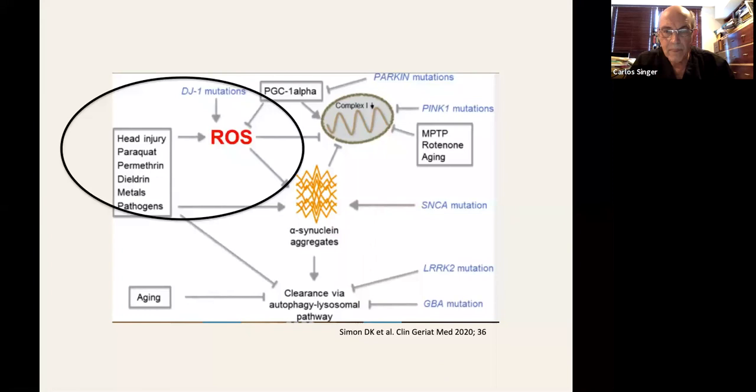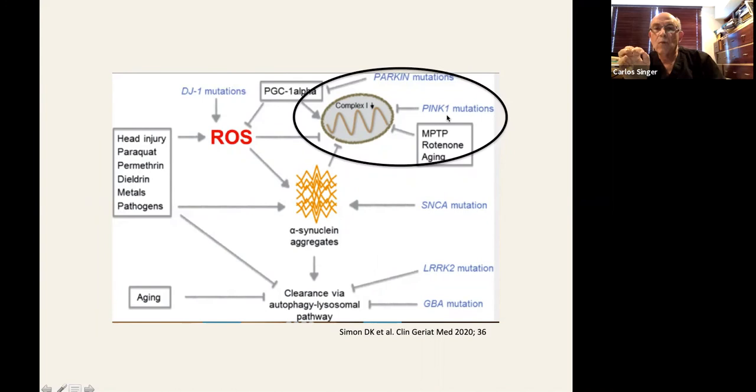You have Parkin mutation, PINK1 mutation, which once there is a mutation, that is bad news for mitochondrial function, particularly mitogenesis and mitophagy. And you have an accumulation of dysfunctional mitochondria. Rotenone can also cause mitochondrial stress.